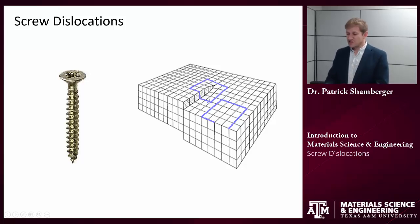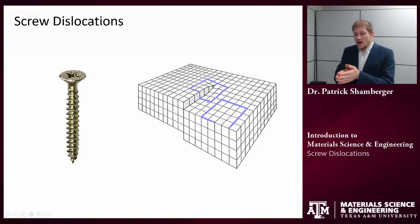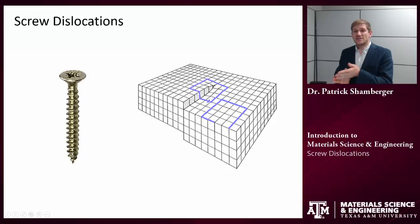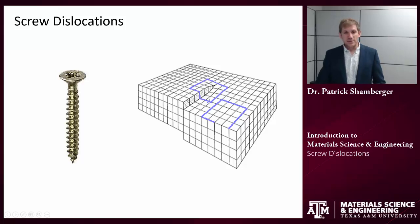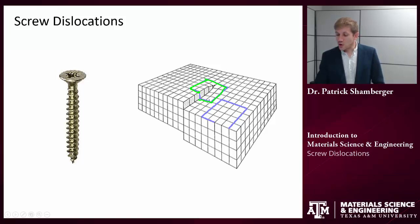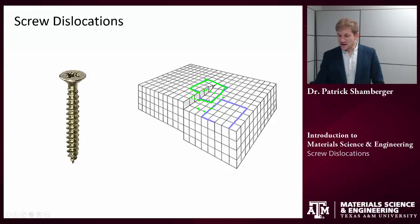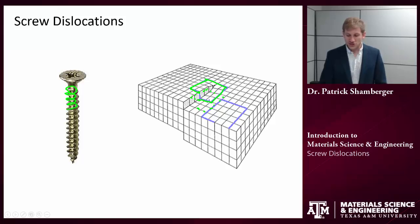Screw dislocation is very different. Instead of having an extra half a plane, the lattice itself is sheared, so part of that lattice is offset by a bit relative to the other part of the lattice. It gets its name 'screw dislocation' because if we start at one point on the crystal lattice and we walk a path around, we end up immediately below that point, and if we continued to do that, we would end up below that point again and so on. So it follows the helical path of a screw.